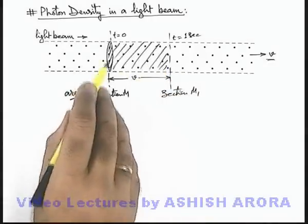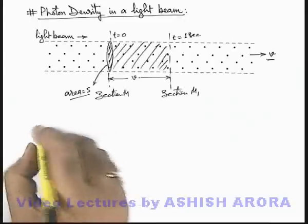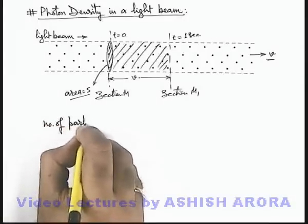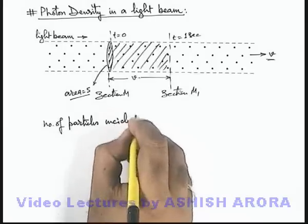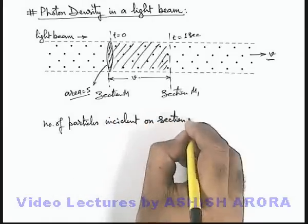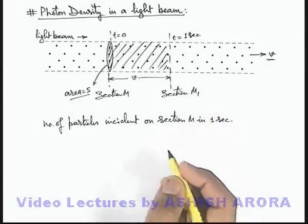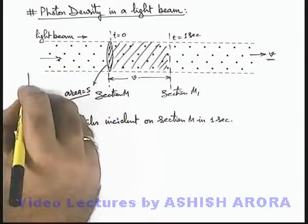have already crossed this section M during 1 second. So we can directly state here: number of particles incident on section M in 1 second. Then we can directly state if in this direction the particles which are reaching here,